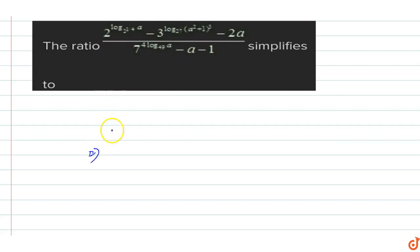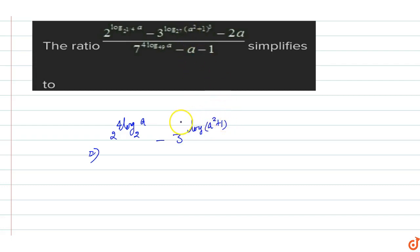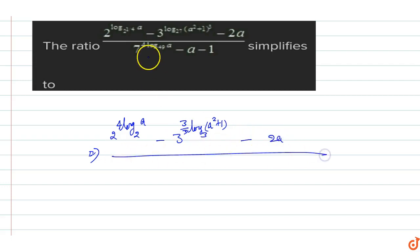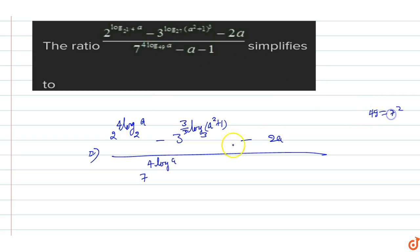To simplify, this equals 2 raised to power log of a base 2 raised to power 1 by 4, minus 3 raised to power log of (a squared plus 1) whole cube. Now 27 is 3 power 3, so we substitute that. Minus 2a upon 7 raised to power 4 log a base 49, and 49 is 7 squared.